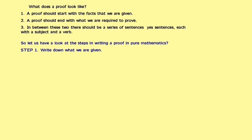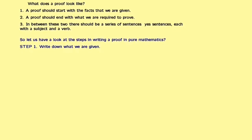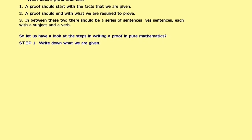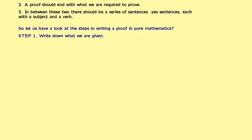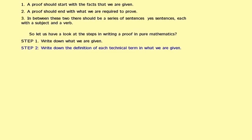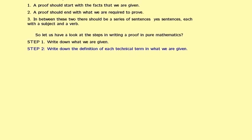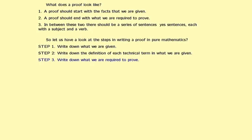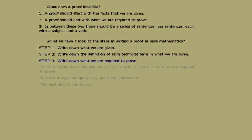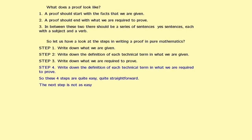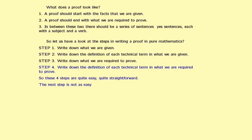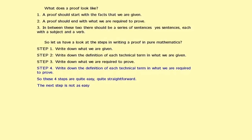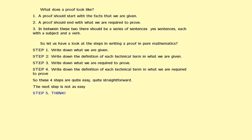So let us have a look at the steps in writing a proof in pure mathematics. Step 1: Write down what we are given. Step 2: Write down the definition of each technical term in what we are given. Step 3: Write down what we are required to prove. Step 4: Write down the definition of each technical term in what we are required to prove. So these four steps are quite easy and straightforward. The next step is not as easy. Step 5: Think.